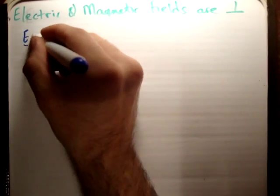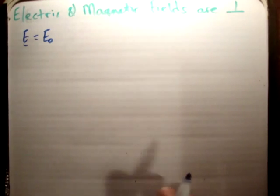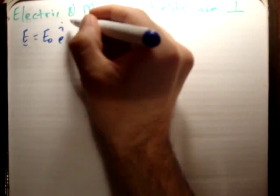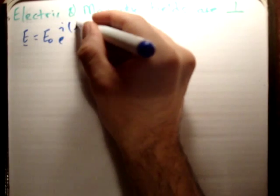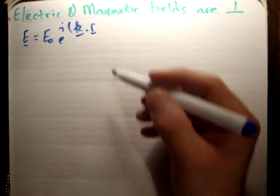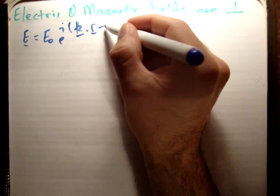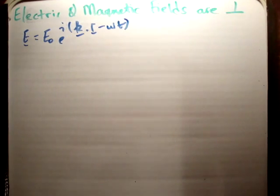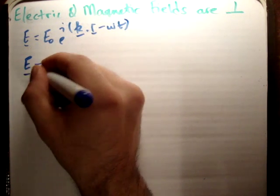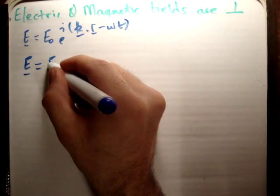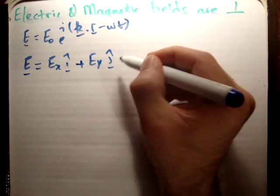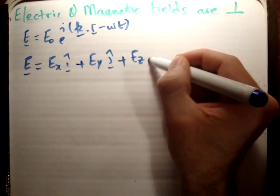I'm going to define the electric field as equal to the initial amplitude E₀ times the complex exponential of the wave number dot product with the displacement vector minus ωt, ω being the angular frequency. This vector is the same thing as E_x in the i-hat direction, plus E_y in the j-hat direction, plus E_z in the k-hat direction.